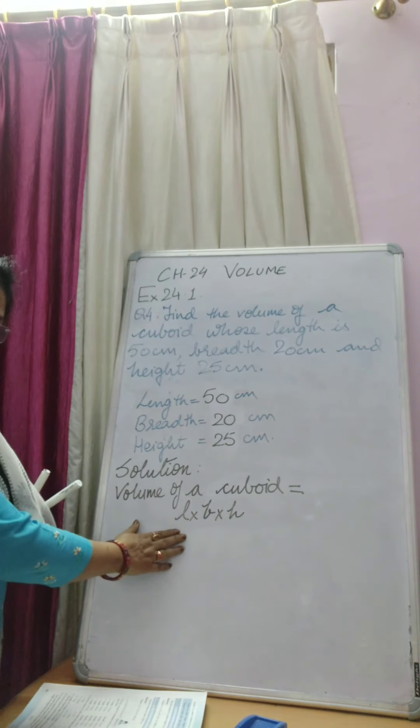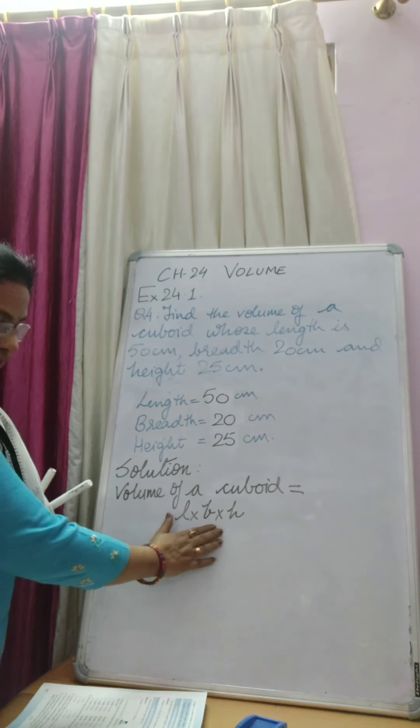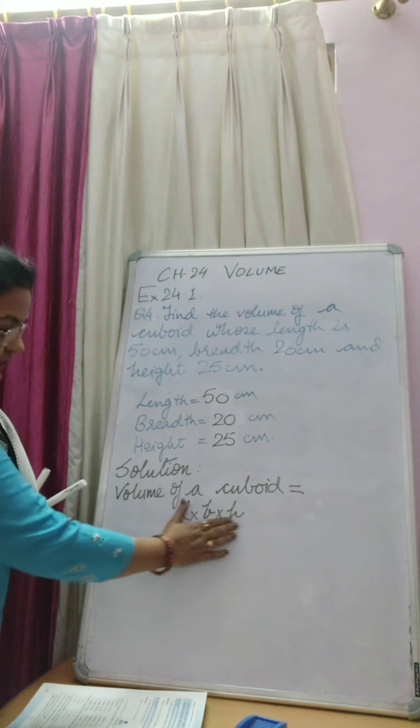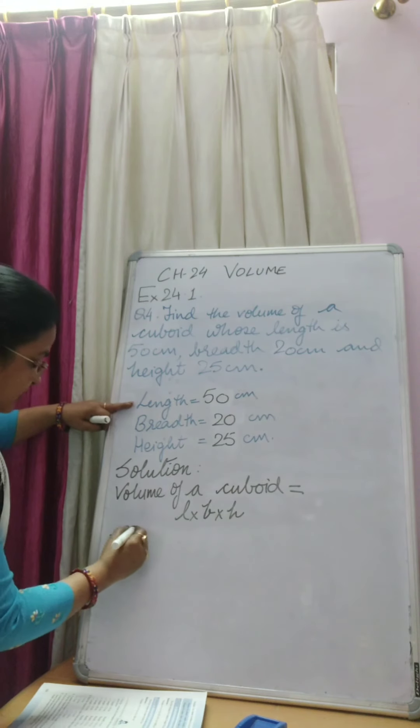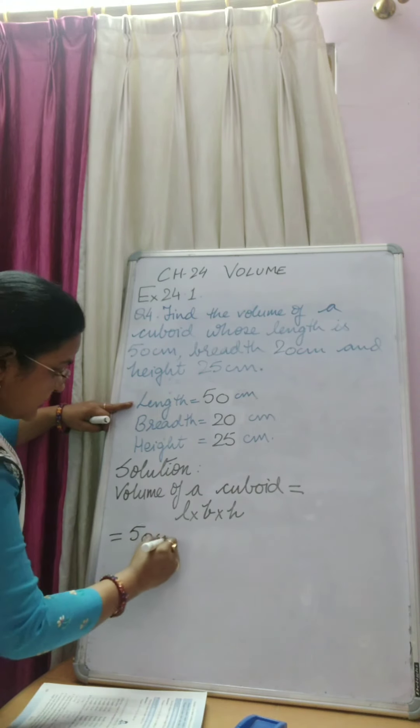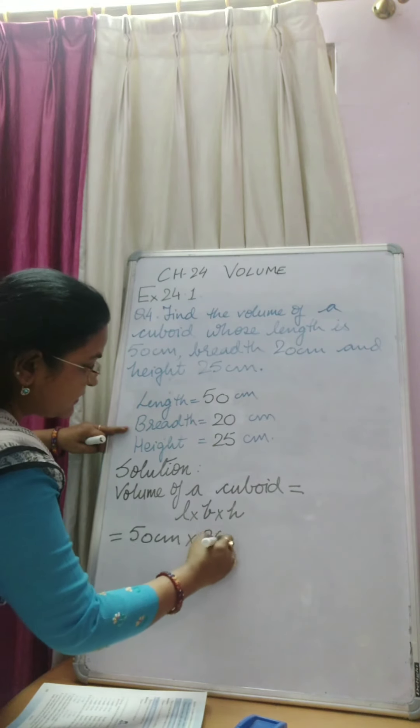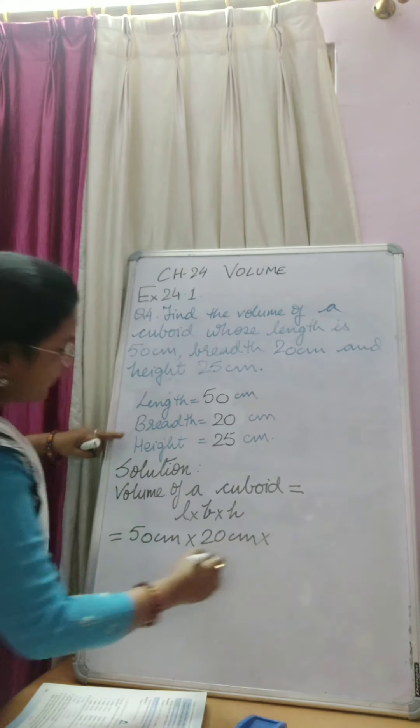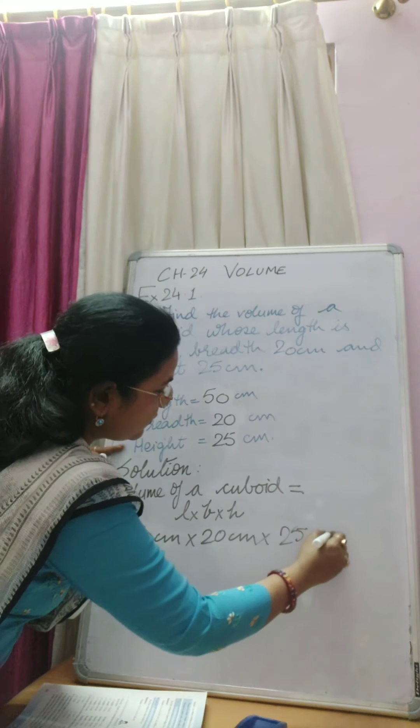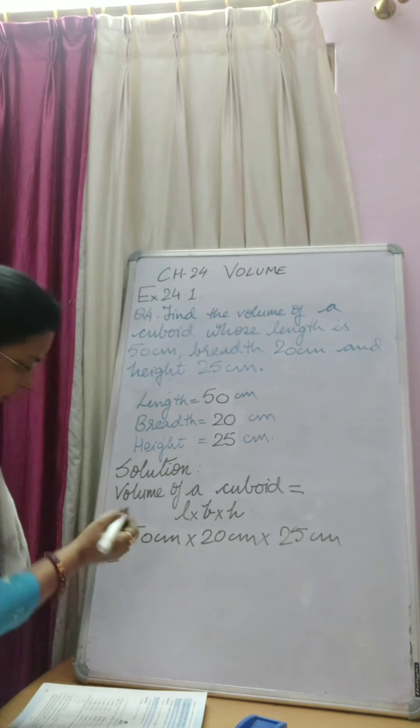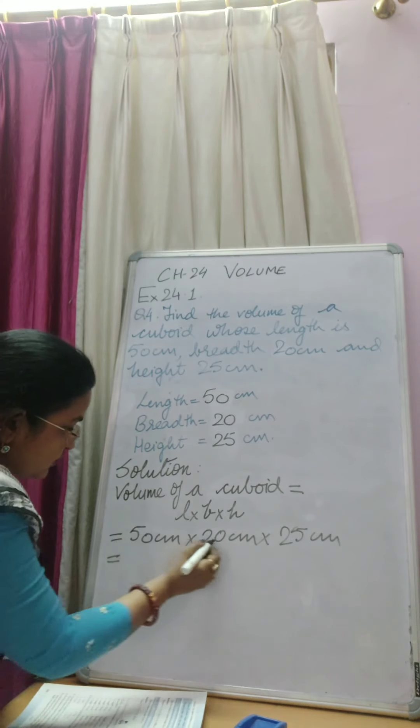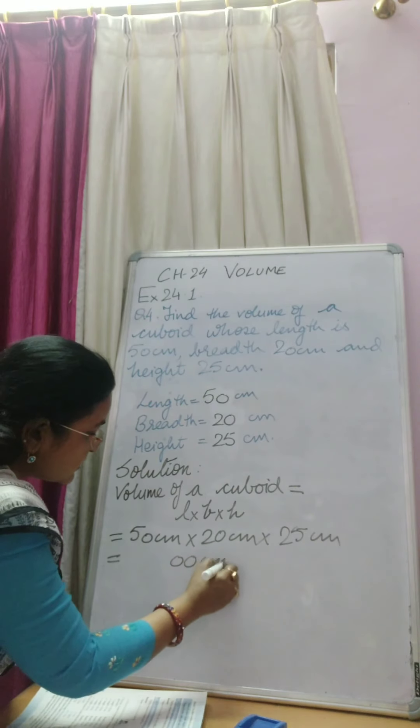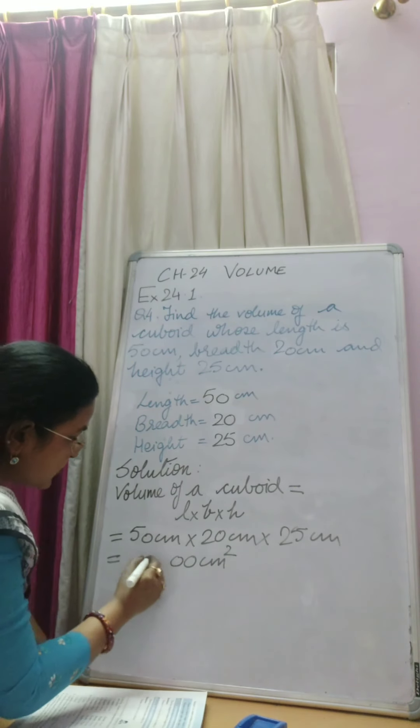Volume of a cuboid we all know, its formula is length into breadth into height, L into B into H. Now we will put the values of length, breadth and height here and find the volume of cuboid. Length is 50 cm, so 50 cm into breadth is 20 cm into height is 25 cm. Now we will multiply. So we have already learned how to multiply zeros. So 0, 0, 2 zeros with centimeters squared and 5 twos are 10.